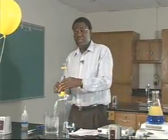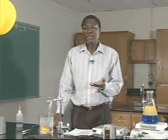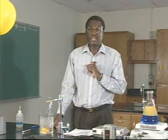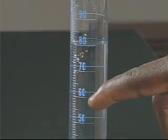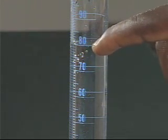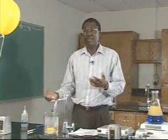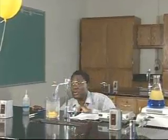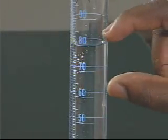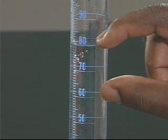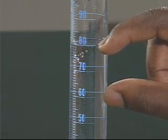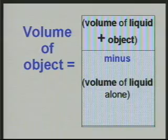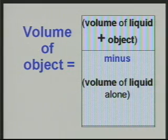Once your object is in the measuring cylinder, you'll notice the volume has increased because something else is now in there. Read the new volume again, avoiding parallax by getting your eye level with the bottom of the meniscus. You will have two volume readings: the reading before you placed the object in and the reading after. The difference between the two readings gives you the volume of the material.